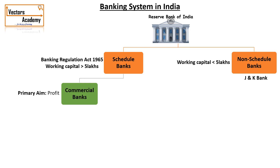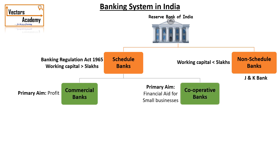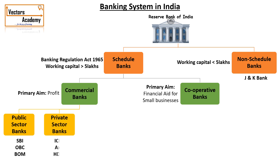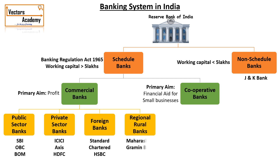There are two types of scheduled banks: one is the commercial bank and the other is the cooperative banks. The commercial bank can be a public sector bank like SBI, Orient Bank of Commerce, and so on. Then we have private sector banks like ICICI, Axis, and HDFC. The foreign banks are those who have to fulfill the norms of the RBI as well as their host country. And we have regional rural banks, which are banks established to reach out to people in the rural areas.